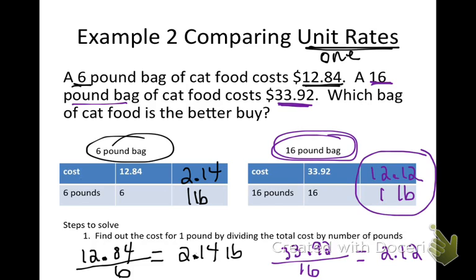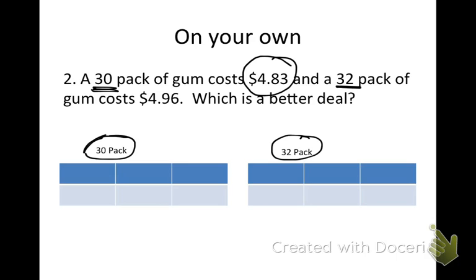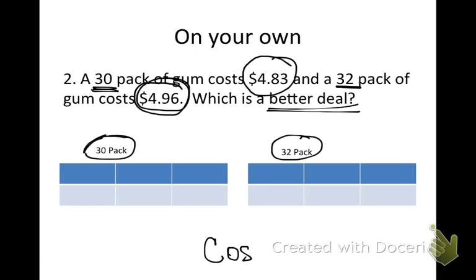Now you're going to try this one on your own. I've set up the charts at the bottom — just fill them out like we did in the previous example. If you need to rewind, go ahead. We're looking at which gum is a better deal: a 30-pack that costs four dollars and eighty-three cents, or a 32-pack that costs four dollars and ninety-six cents. In the text box on the right, tell me the cost per piece and which is the better deal — the 30-pack or the 32-pack.